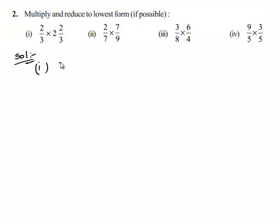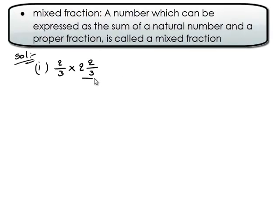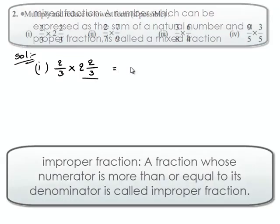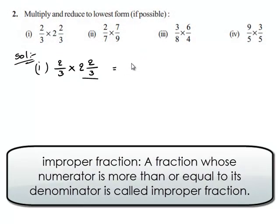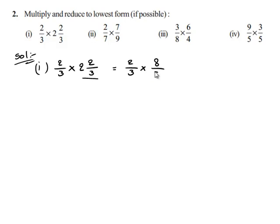Take down the first one, that is 2 upon 3 multiplied by 2 and 2 by 3. Here, 2 and 2 by 3 is a mixed fraction. So, by converting this into an improper fraction, we will get 2 upon 3 multiplied by 2, which is 6 plus 2, that is 8 upon 3.